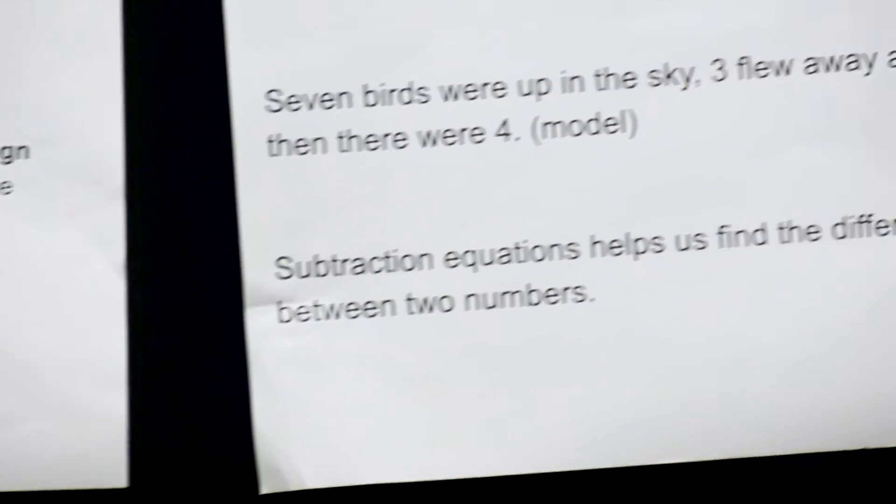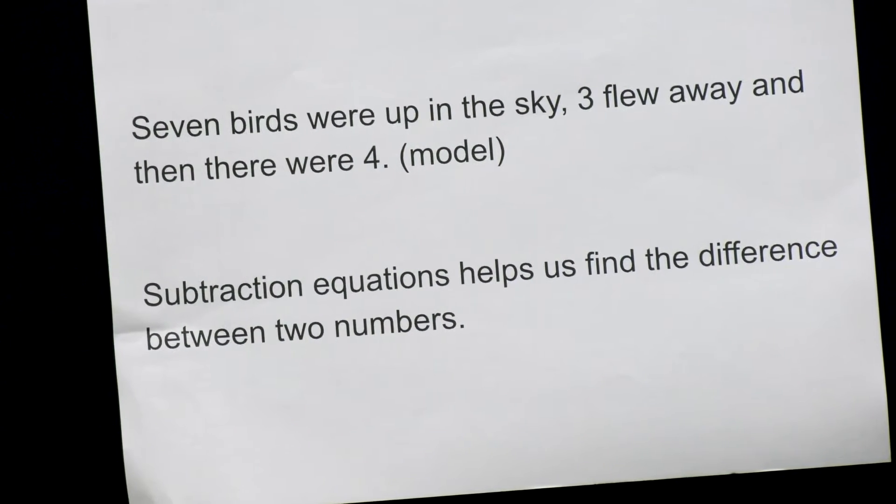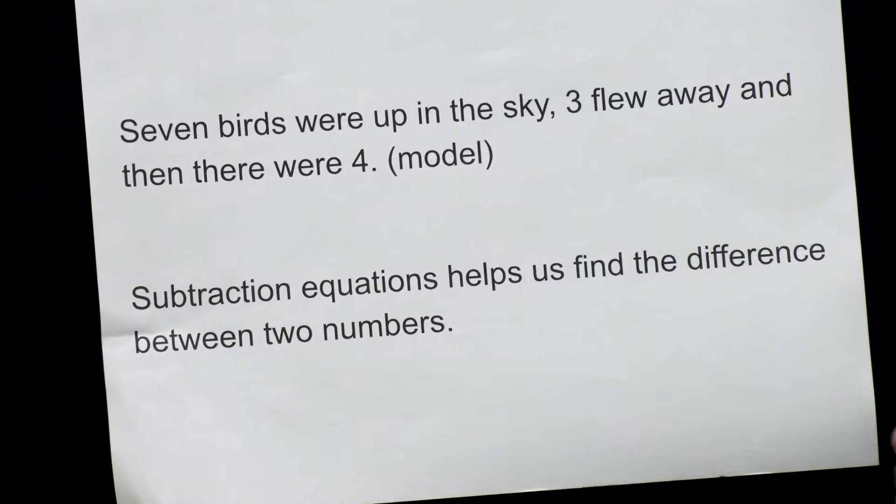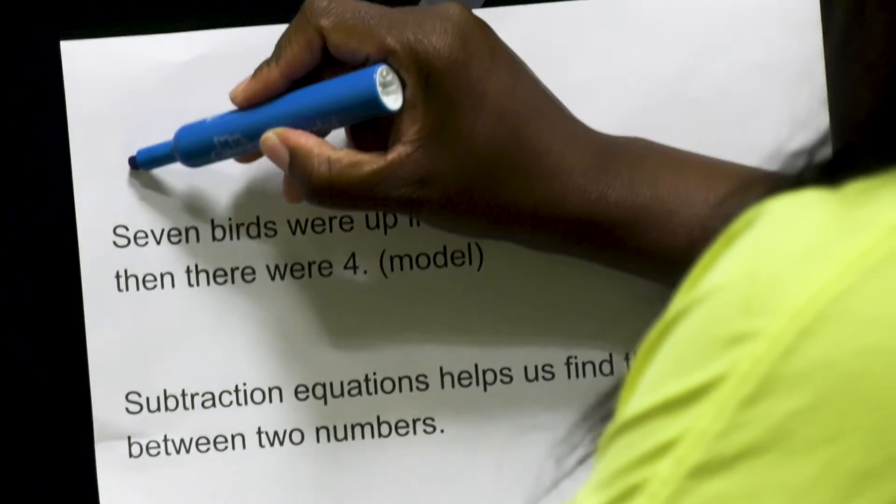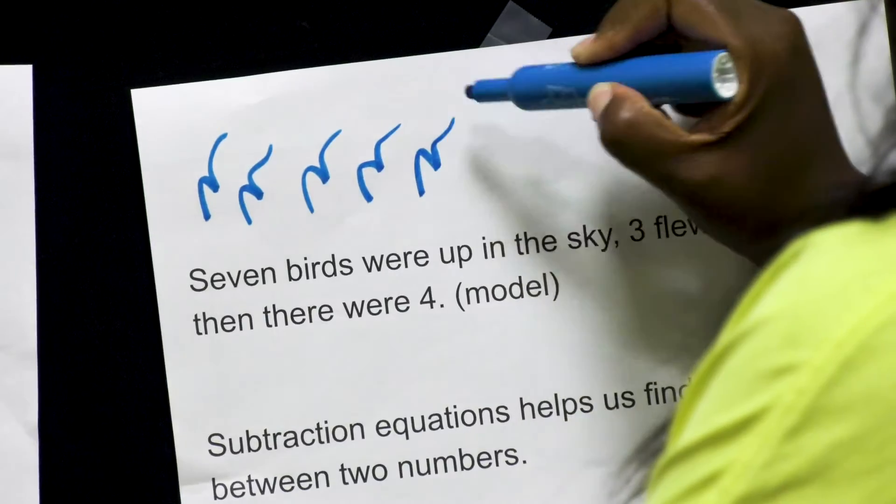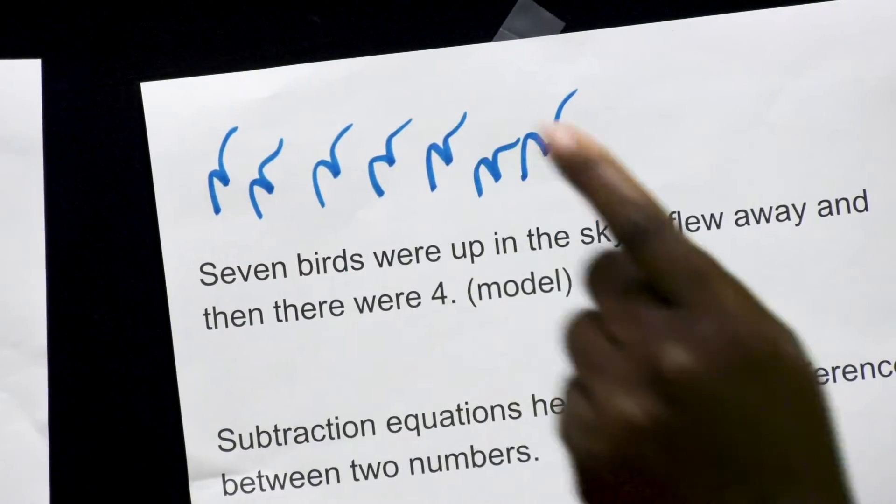Here it says seven birds were up in the sky, three flew away, and then there were four. So Miss Allen is going to draw some of Miss Allen's version of birds. Okay, that's seven.